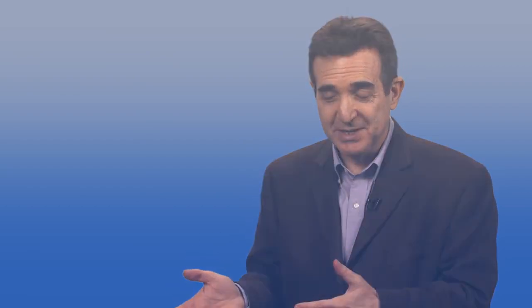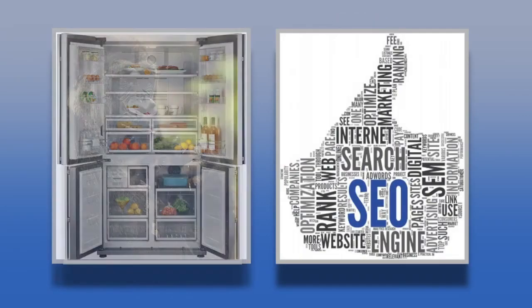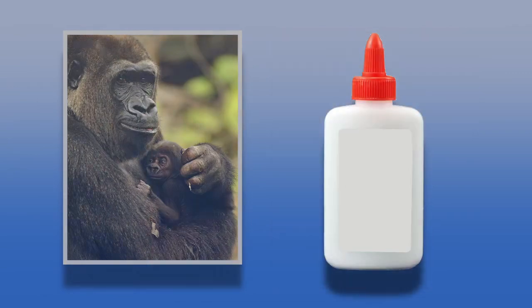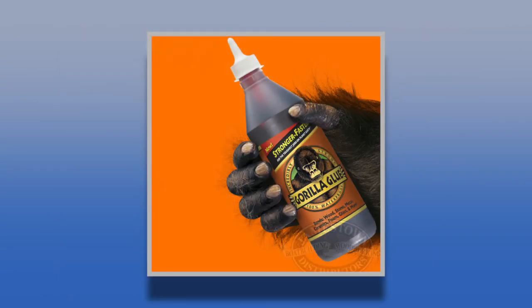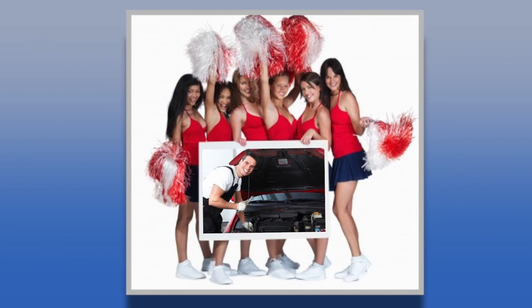Where do you come up with these associations? Simple. Just put two things together that don't go together — like refrigerators and SEO, or gorillas and glue (actually somebody did that), or cheerleaders and car repair. There are even websites that will give you suggestions for absurd associations. Just Google 'random word generator' and you'll have hours of fun putting silly but potentially very effective ideas together, so you don't even have to be creative.